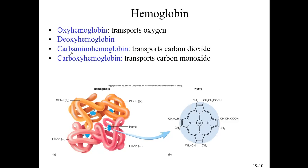Carbaminohemoglobin means hemoglobin is transporting carbon dioxide. We'll discuss CO2 and O2 transport more when we get to the respiratory system. Hemoglobin can also bind carbon monoxide, forming carboxyhemoglobin. Carbon monoxide is a dangerous, odorless gas that binds to hemoglobin and blocks the transport of oxygen throughout the body.